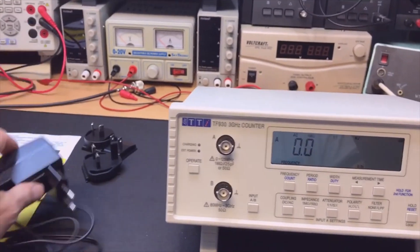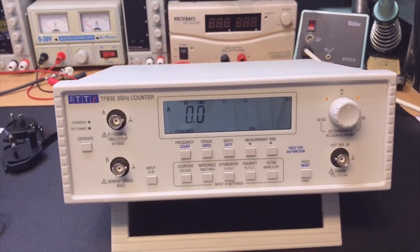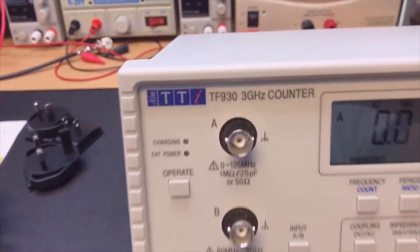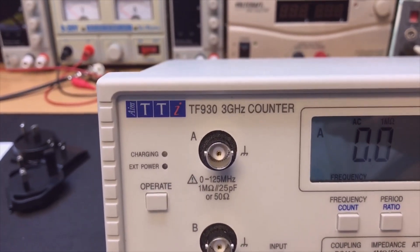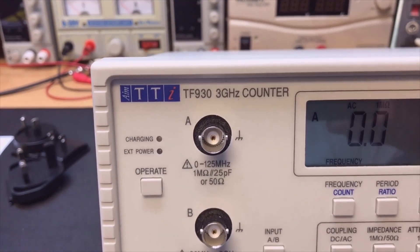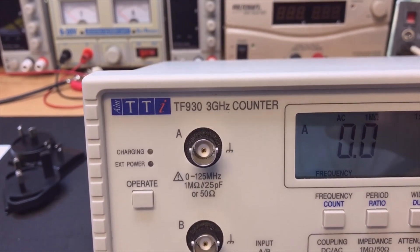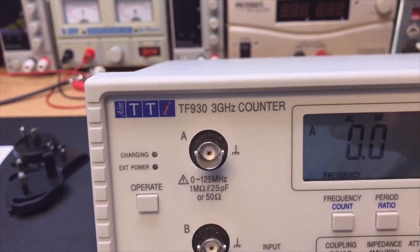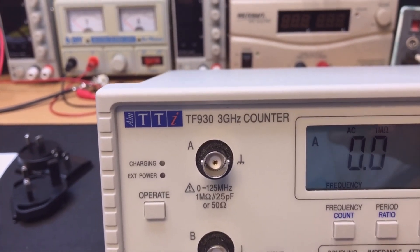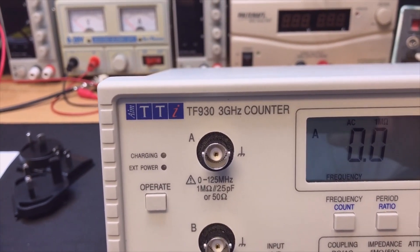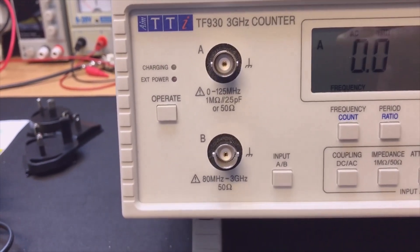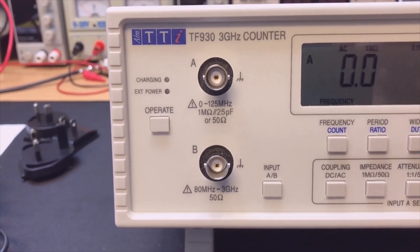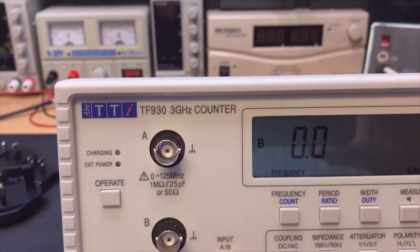Here's one of the inputs. The input probably goes from DC to 125 megahertz. You have the 1 megaohm input for the probe and also the 50 ohms. You have your second input that goes way to 3 gigahertz, and a simple button just to switch from A to B.